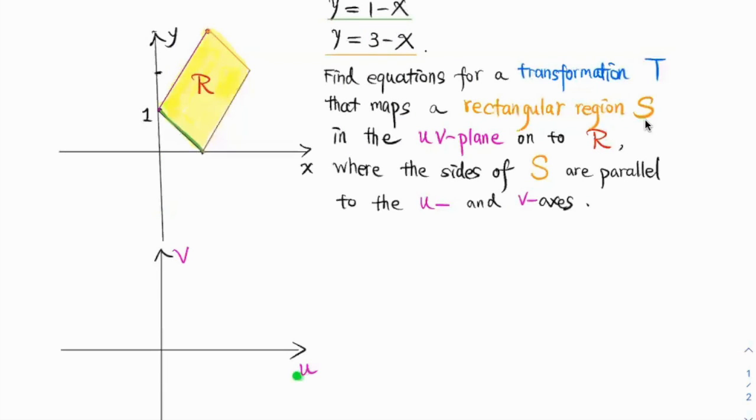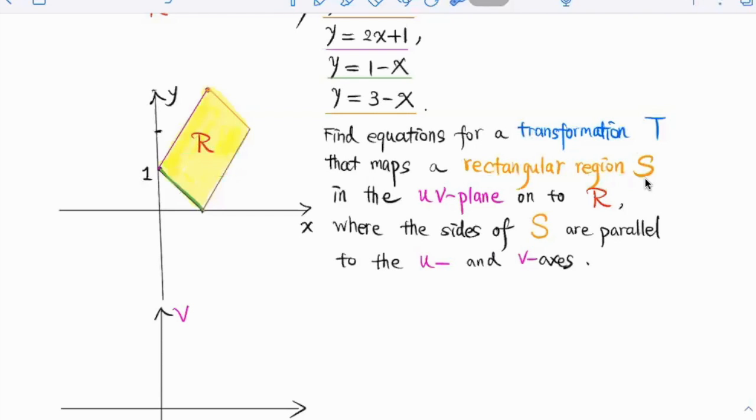We have this UV plane over here. We're trying to find a region S, which is going to be a rectangular shape that maps to this R here on the XY plane. Let's find out what kind of transformation we can put over here.